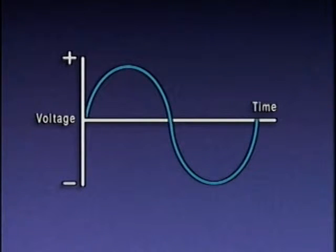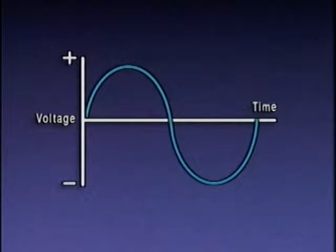The transformers used in electrical distribution systems operate on alternating current, or AC. Alternating current gets its name from the fact that it reverses direction periodically — in fact, it reverses many times per second. It's easier to understand this characteristic if we look at this graph, which shows how AC voltage would look plotted over time.